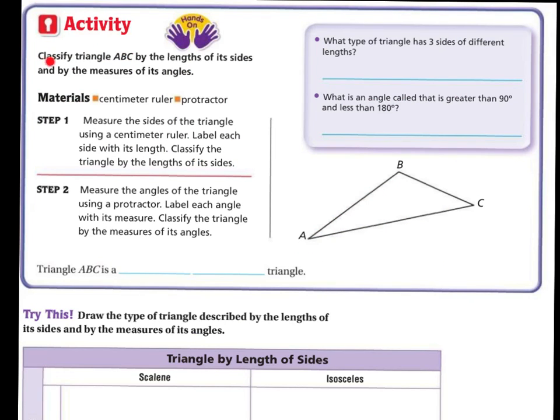Alright, activity. Let's classify the ABC triangle by the length of its sides and by measuring its angles. So, if I have a ruler, which I'm going to pretend that I've got a ruler right now, I'm going to measure the AB segment. And when I measure the AB segment, I'm going to get four centimeters.